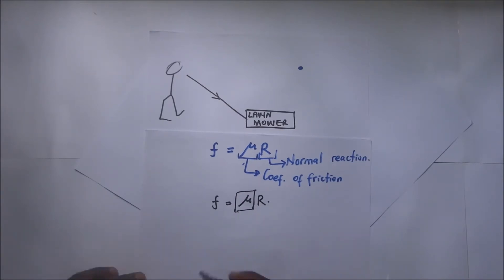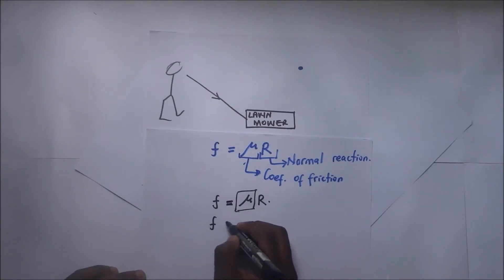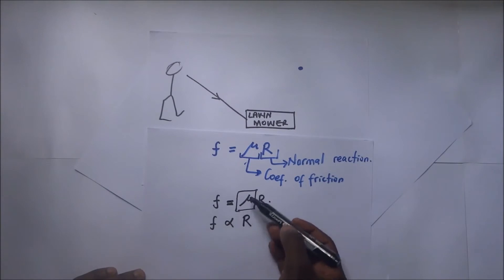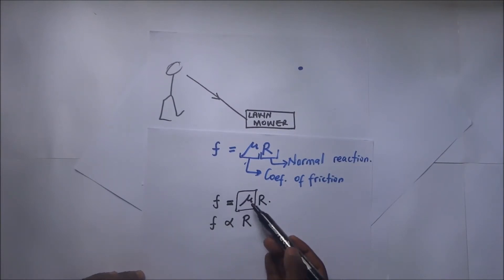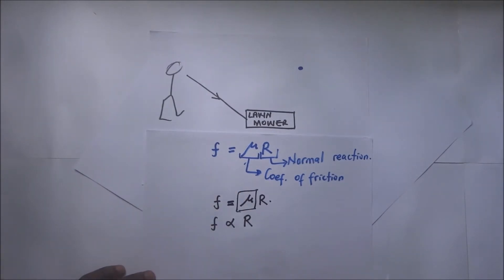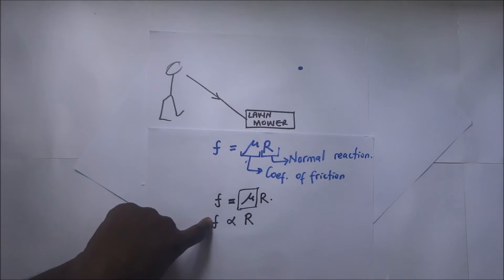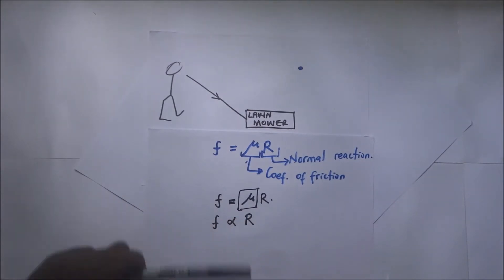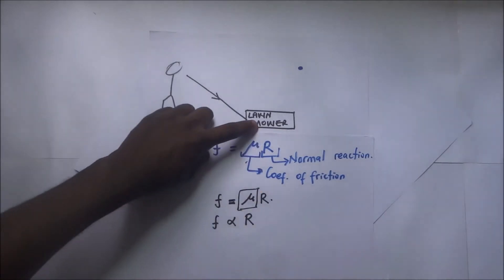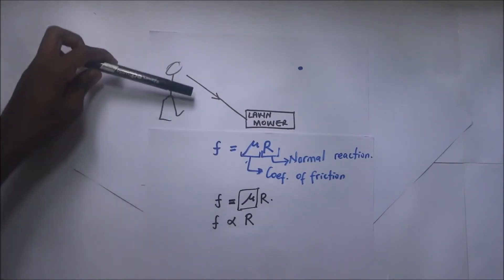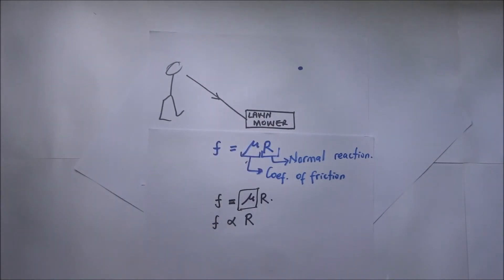What I'm trying to say is that the frictional force is directly proportional to the normal reaction. To remove the proportionality sign, we get mu — the constant of proportionality called the coefficient of friction. So the frictional force is directly proportional to the normal reaction: if the frictional force is small, the normal reaction is small; if the frictional force is high, the normal reaction is also high. We will examine the normal reaction acting on the lawnmower in each case to explain why it is harder to push and easier to pull.